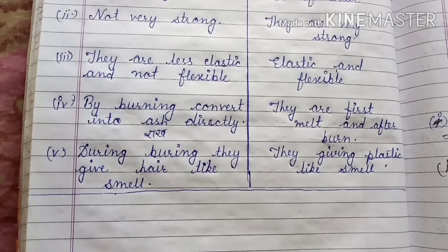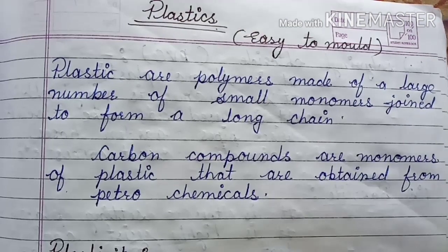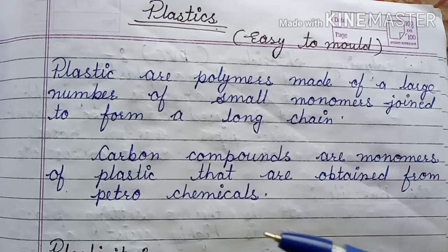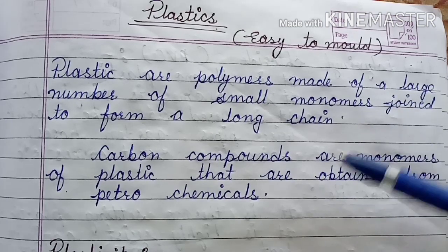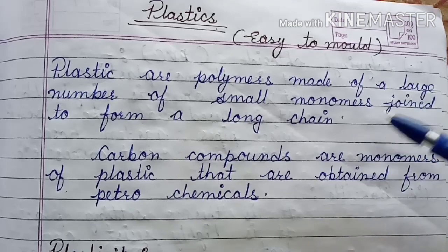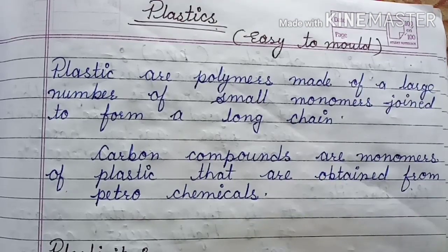Next topic is plastic. We use a large number of articles made of plastic in our everyday life. Some examples are: plastic bags, water bottles, buckets, mugs, water tanks, water pipes, ballpoint pens, combs, toothbrushes, toys, and shoes. We use all these things that are made of plastic.